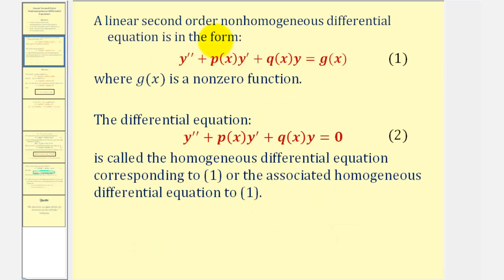The linear second order non-homogeneous differential equation fits this form here. Notice how on the right side of the equation we don't have zero — we have a function of x, in this case g of x. Also notice that the coefficient of y double prime is equal to one, but if it wasn't we could always divide through by that function to have a coefficient of one. We'll call this non-homogeneous differential equation equation one.